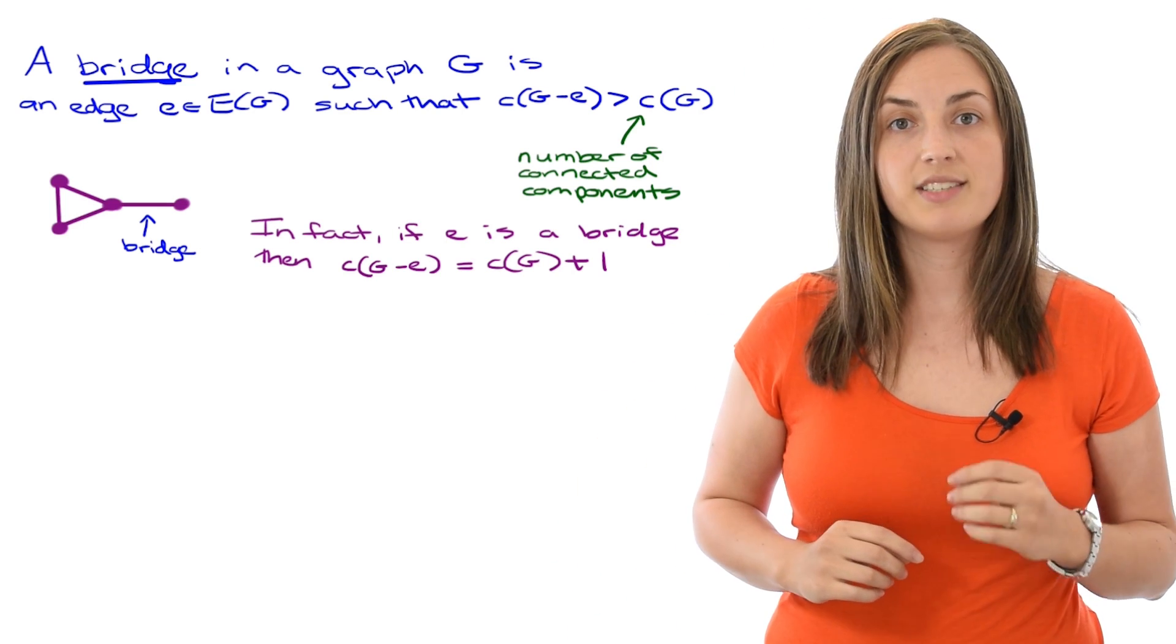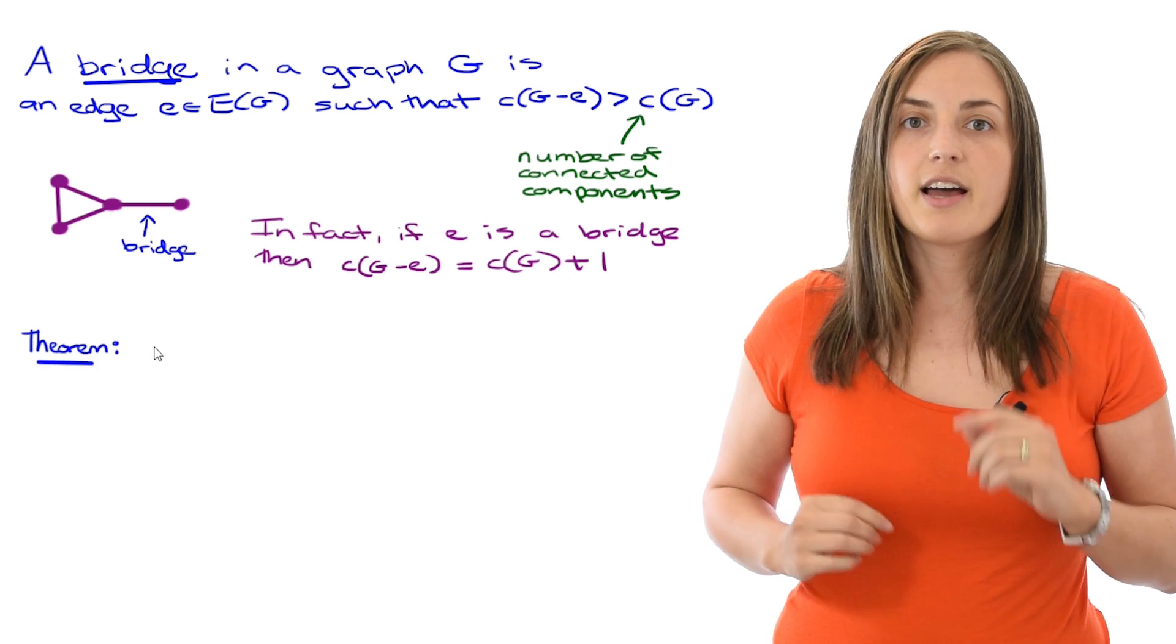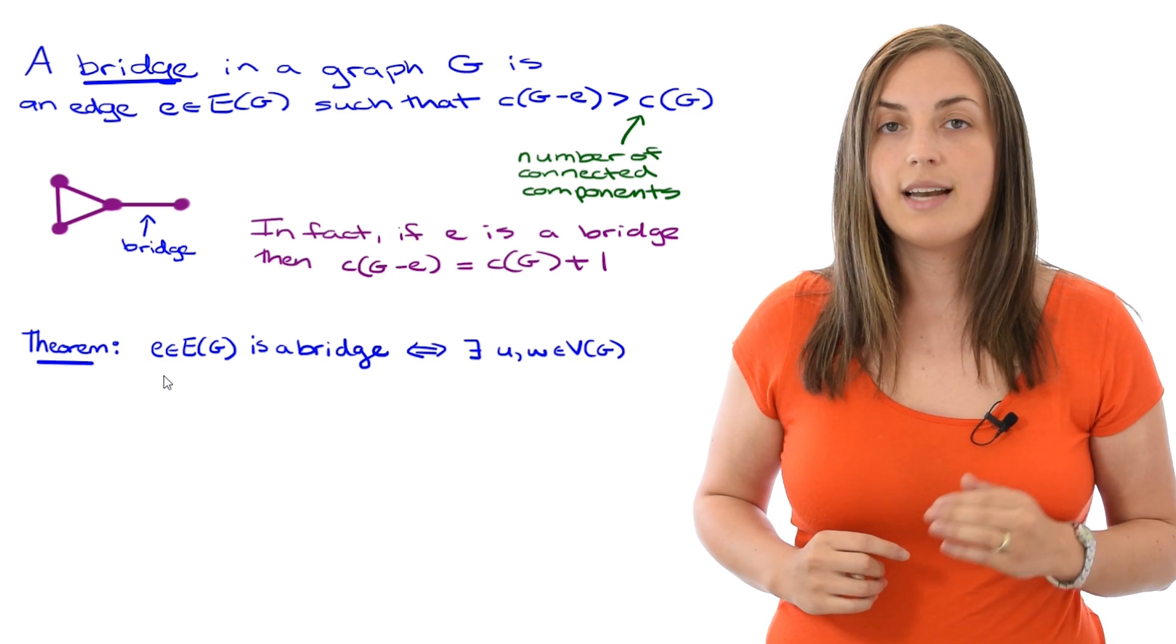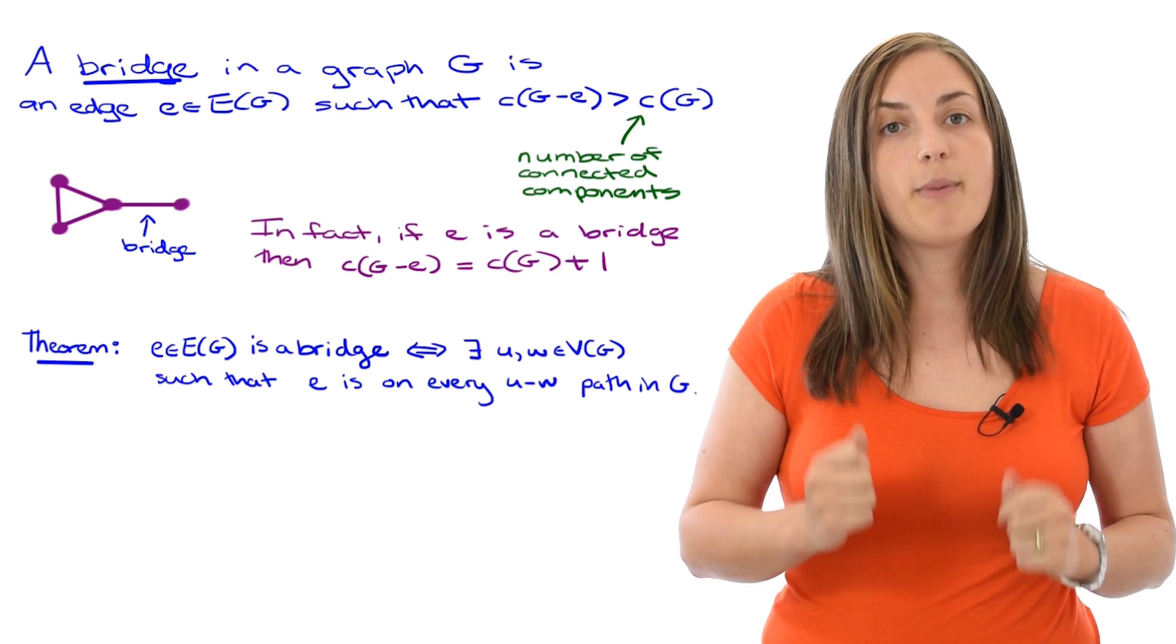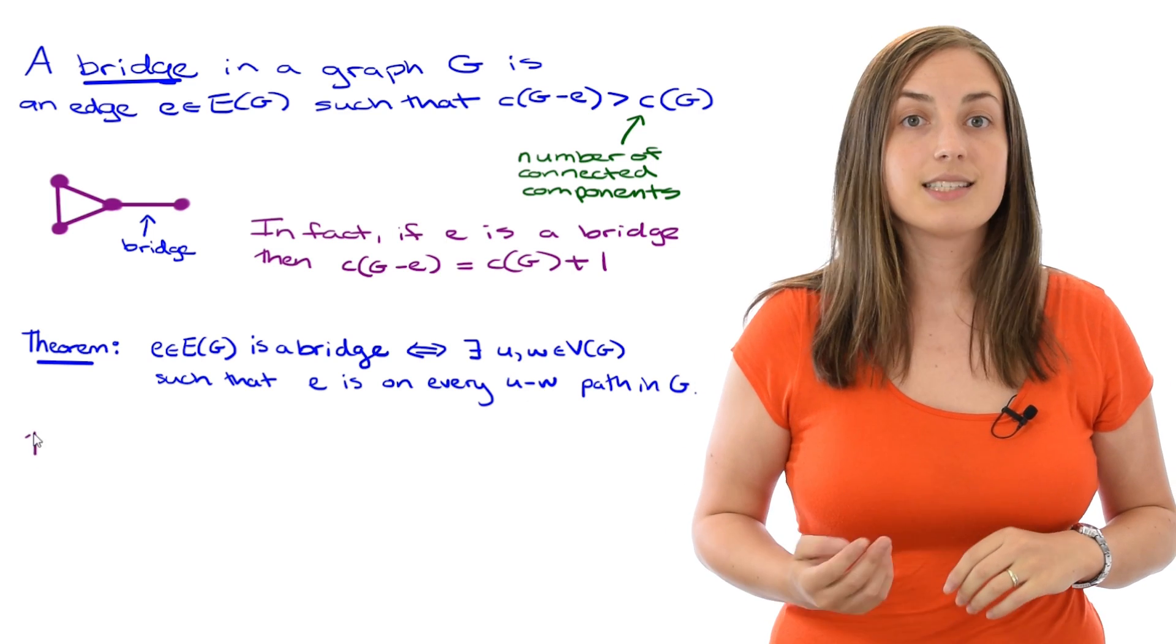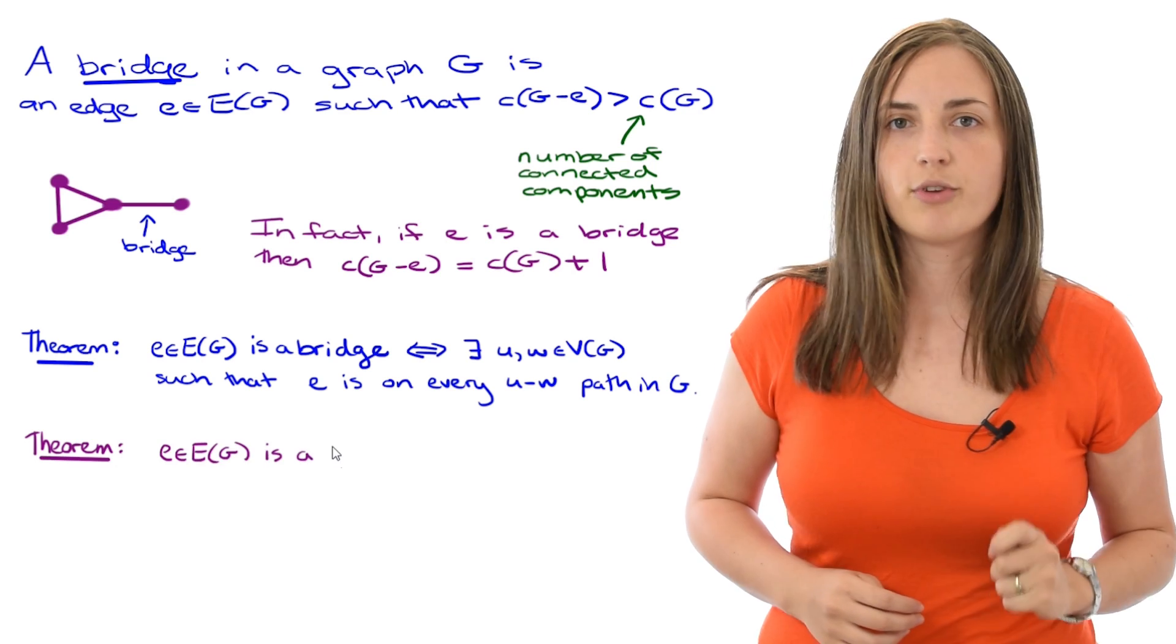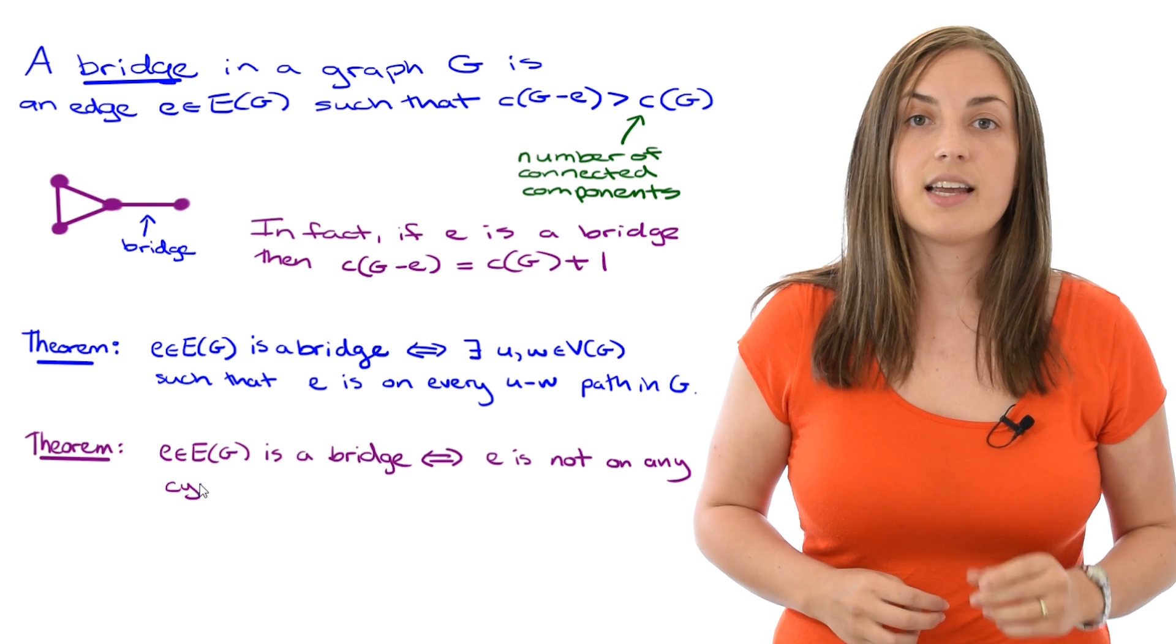Similar to a theorem we've seen about cut vertices, we have a theorem about bridge edges, that an edge is a bridge if and only if there exist vertices u and w such that the edge lies on every u w path in the graph. A second characterization of bridge edges is that an edge is a bridge if and only if it does not belong to any cycle of the graph.